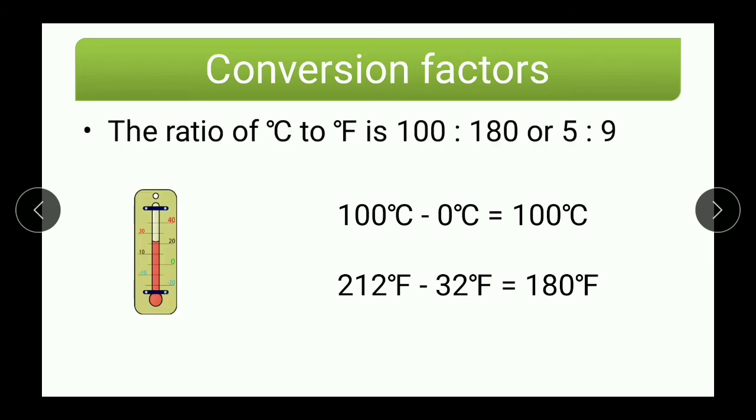Now, that we know this number, the ratio of degrees Celsius to degree Fahrenheit is 100 is to 180. Now, 100 is to 180 is nothing but 5 to 9. We can easily find out this number by simplifying 100 and 180.